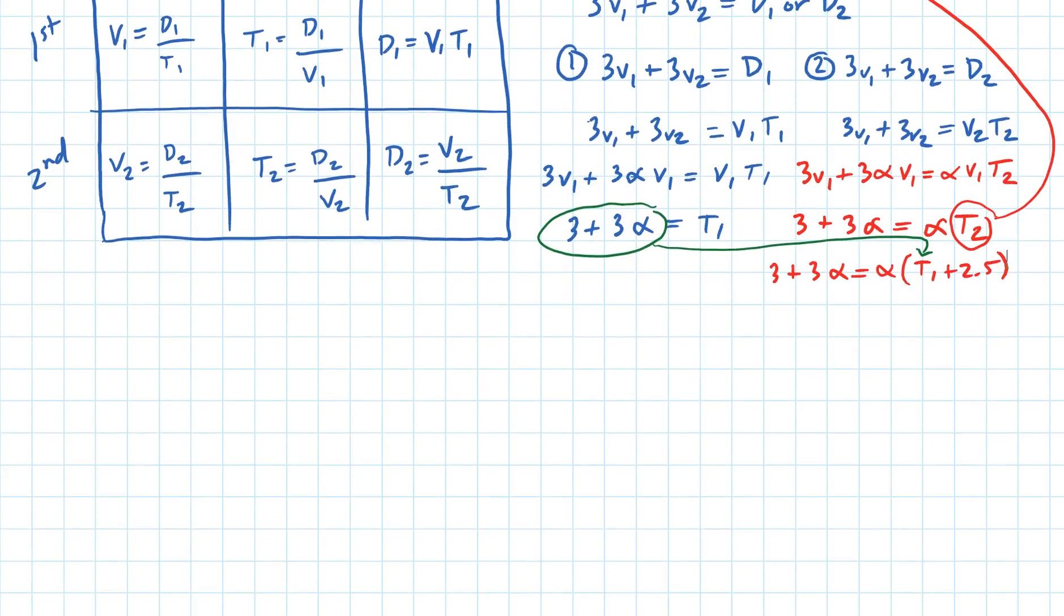And I got 3 plus 3 alpha equals alpha times 3 plus 3 alpha plus 2.5.